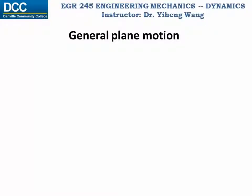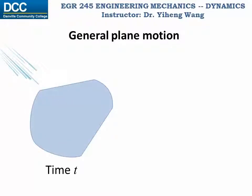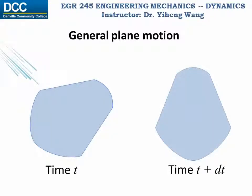Let's imagine at an arbitrary time t an object has moved from somewhere to its current location with the current orientation. After a very short time period dt, it has moved to a new location with a new orientation. This object has both translated and rotated within this plane, and the combination of both translation and rotation is known as general plane motion.